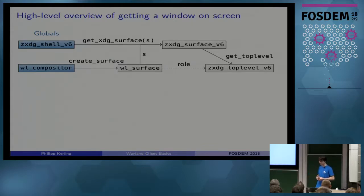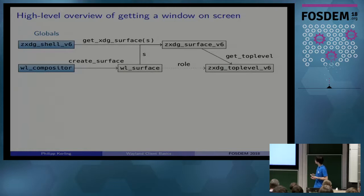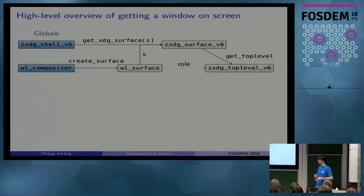To use xdg_shell: get the xdg_shell global, use it to get an xdg_surface object for the surface you created, and then call get_toplevel on the xdg_surface. This toplevel object is then the role of your surface. 'Toplevel' in this case means the top-level window that the compositor will put on screen.